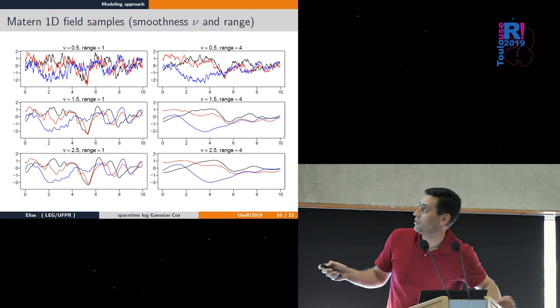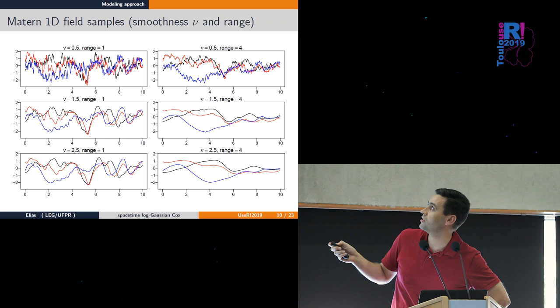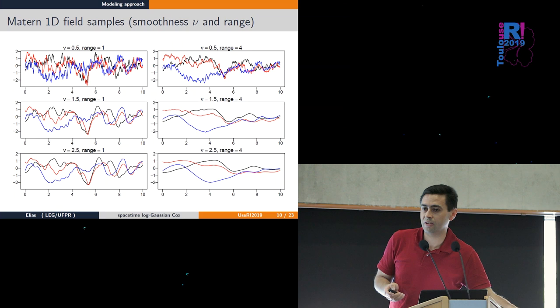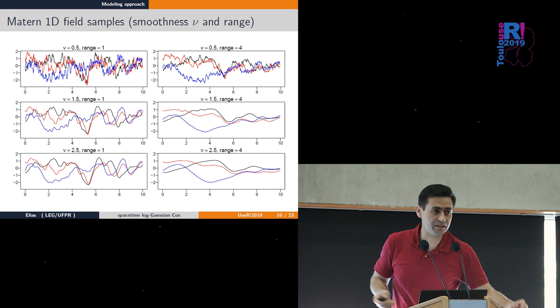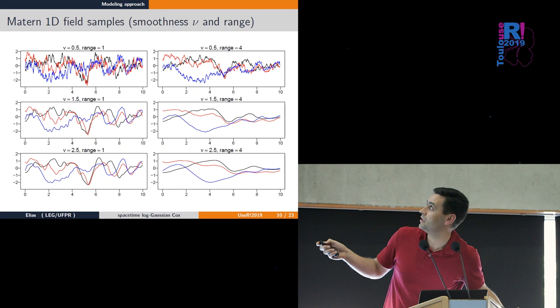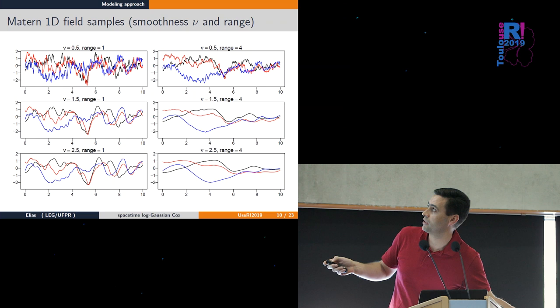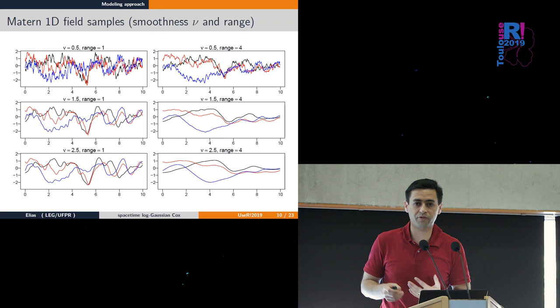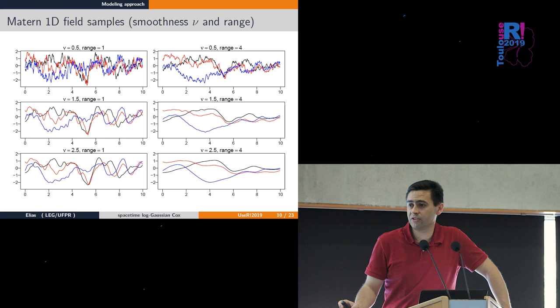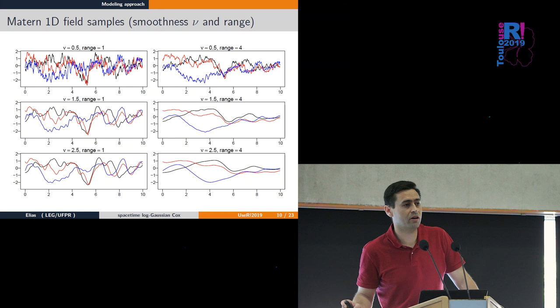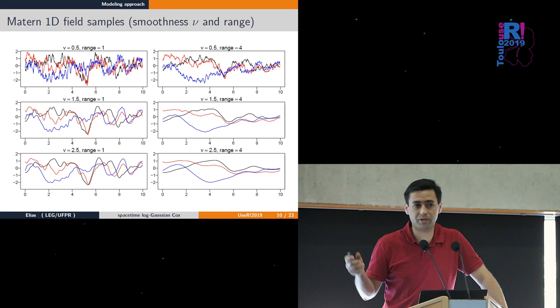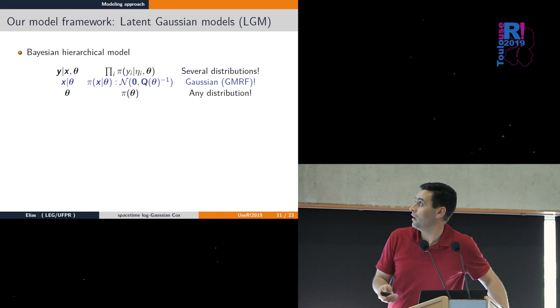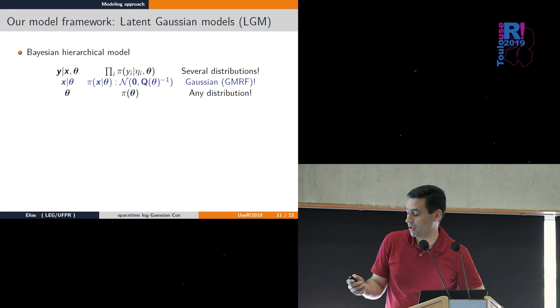I can also change the range parameter. Here with the same smoothness, we have a process that takes more time to vary over possibilities. Range equals one varies more quickly, range equals four varies more slowly. This is important because we can estimate these parameters and compare disease dynamics by looking at range parameters, for example.